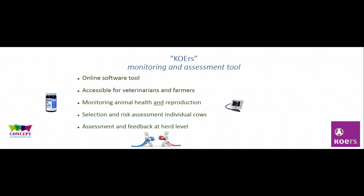We developed this tool called KOURSE — it's a Dutch word meaning direction, which direction you're going with your cows. It's an online software tool, so you can enter the data, but the farmer can do it as well — on your iPad behind the cows. It's accessible for both farmers and veterinarians. It's a scoring method where you can assess cows at the same time, covering animal health and reproduction at both individual cow and herd level.